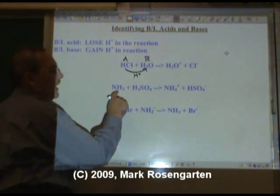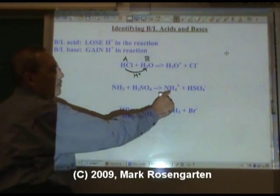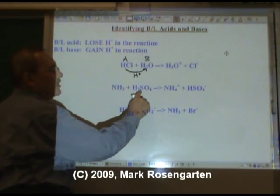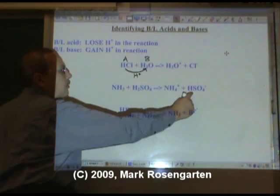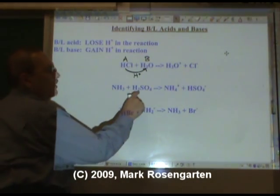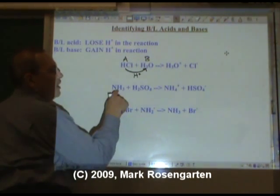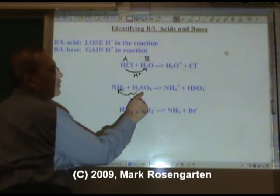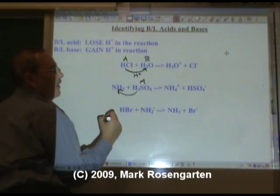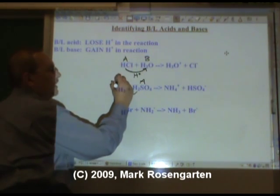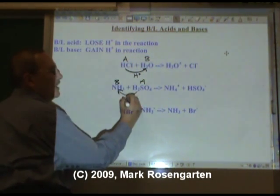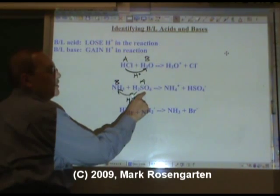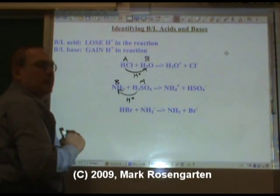In this reaction, NH3 becomes NH4+, and H2SO4 becomes HSO4-. H2SO4 lost the hydrogen, NH3 gained it. Therefore the H2SO4 is acting as the Brønsted-Lowry acid, and the NH3 is acting as the Brønsted-Lowry base. The H+ is lost by the sulfuric acid and gained by the ammonia.